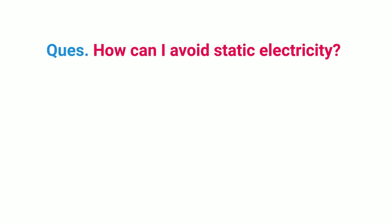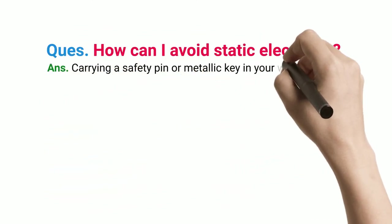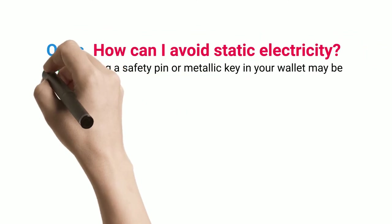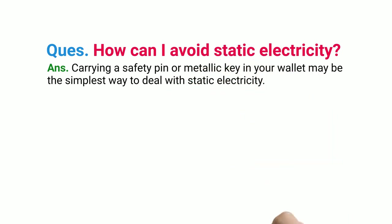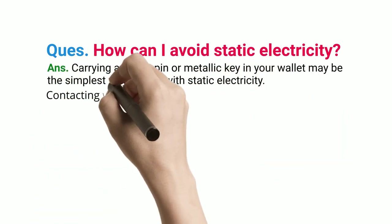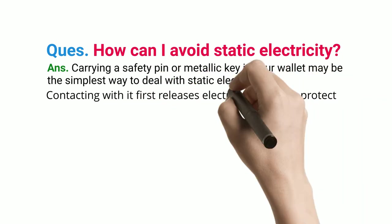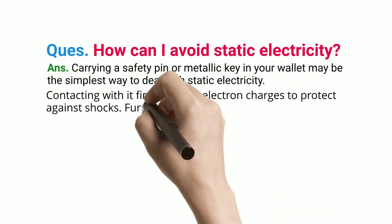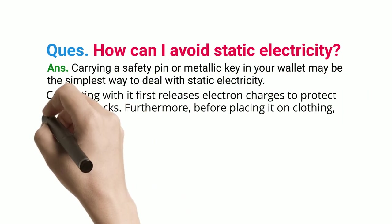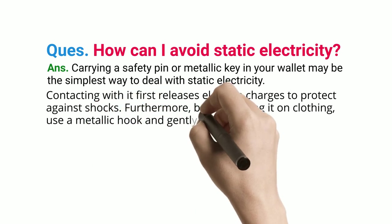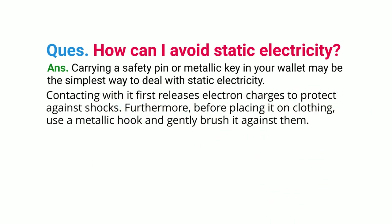Q: How can I avoid static electricity? ANS: Carrying a safety pin or metallic key in your wallet may be the simplest way to deal with static electricity. Contacting with it first releases electron charges to protect against shocks. Furthermore, before placing it on clothing, use a metallic hook and gently brush it against them.